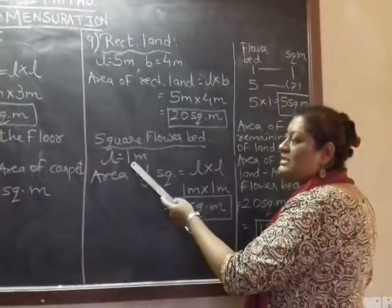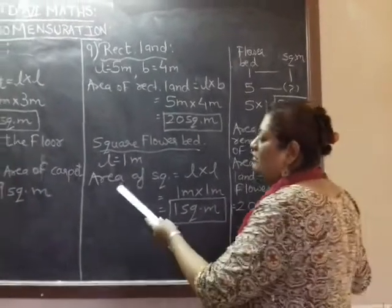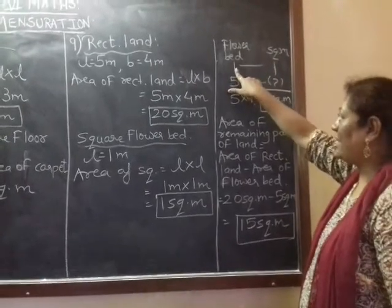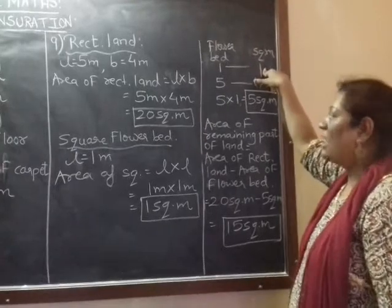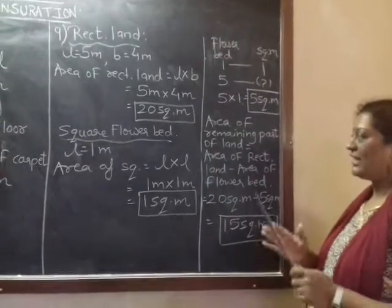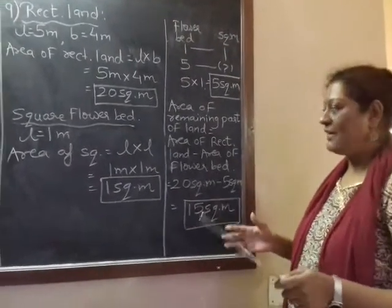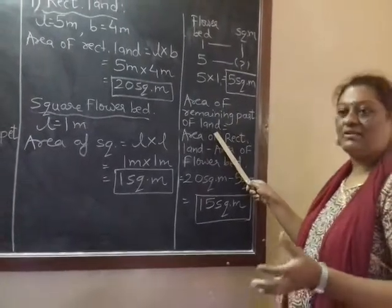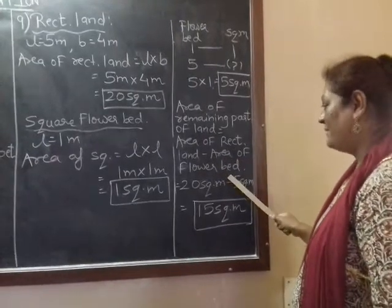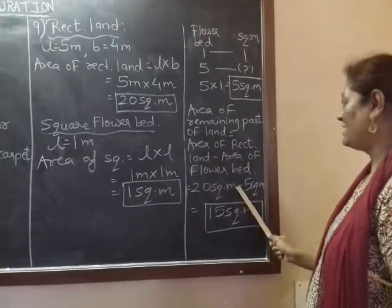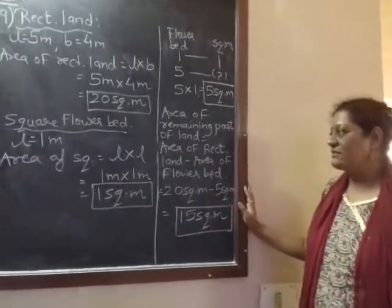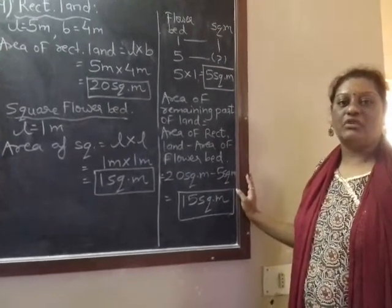The square flower bed has side 1 meter. Area of one square flower bed = 1 meter into 1 meter = 1 square meter. We have 5 such flower beds, so 5 into 1 = 5 square meters. Area of remaining part of land = area of rectangular land minus area of square flower beds = 20 minus 5 = 15 square meters. That is the land without flower beds.